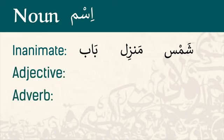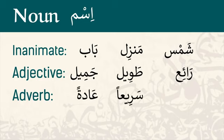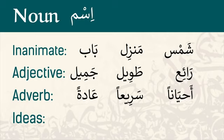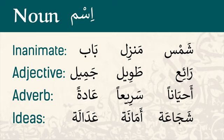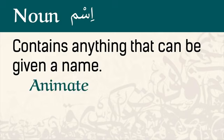Adjectives and adverbs also follow nouns. Adjectives like jamil (beautiful), tawil (tall), or ra'i' (wonderful). Adverbs like 'adatan (usually), sari'an (quickly), or ahyanan (sometimes). Ideas and abstractions are also nouns: 'adalah (justice), amanah (honesty), or shaja'ah (bravery). So in short, Arabic nouns contain anything that can be given a name — animate, inanimate, or even ideas and abstractions.